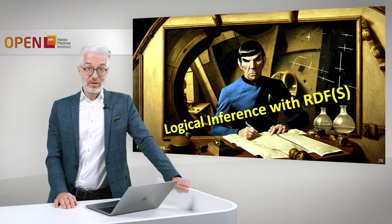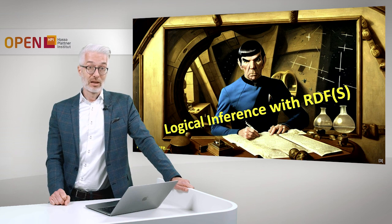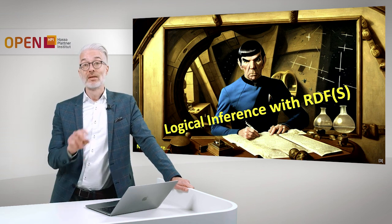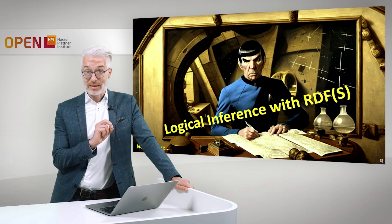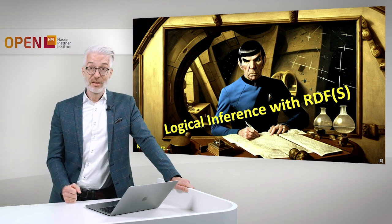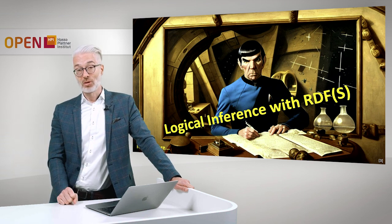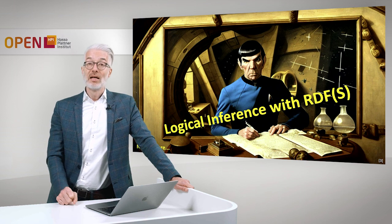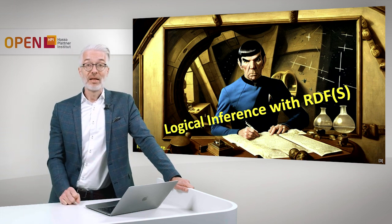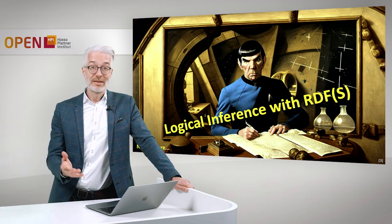So far so good. You have now learned almost everything there is to learn about RDF and RDFS. The last thing still missing is the explicit semantics already given there. When we defined RDFS, you saw the semantics of specific constructs and properties. Based on that semantics, we will be able to draw logical inferences, and how to do that you will see in the next lecture.